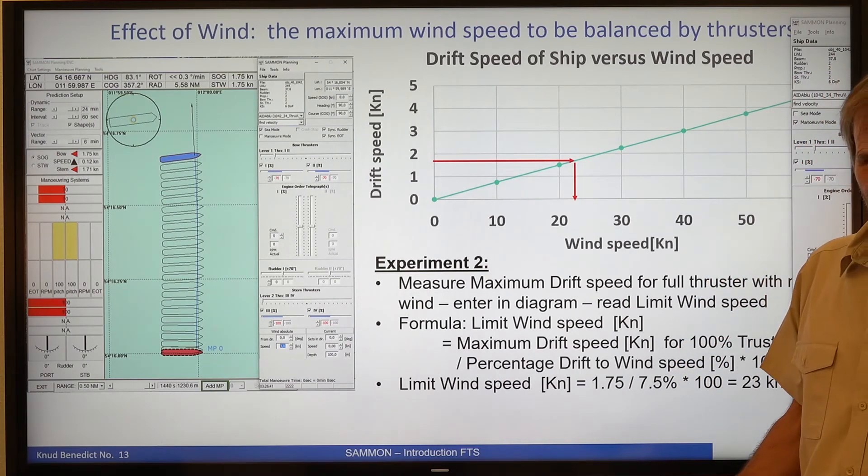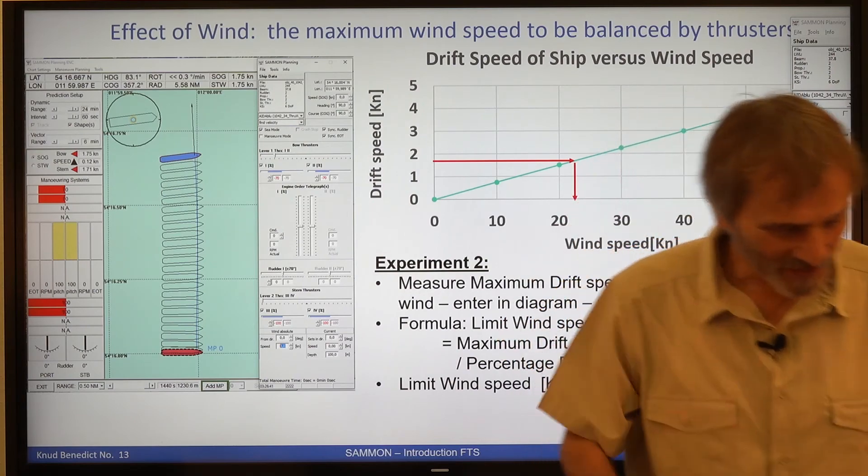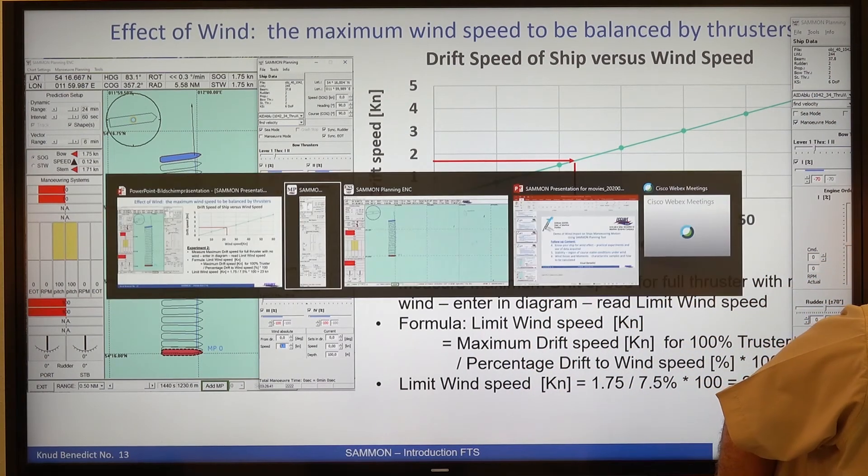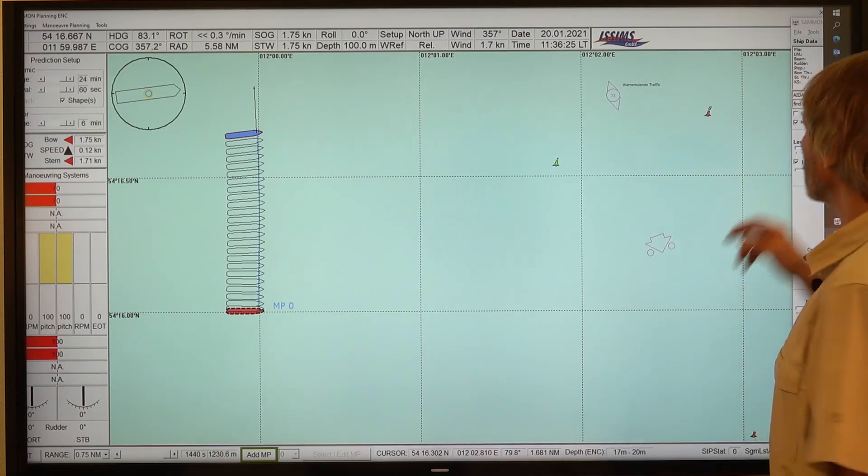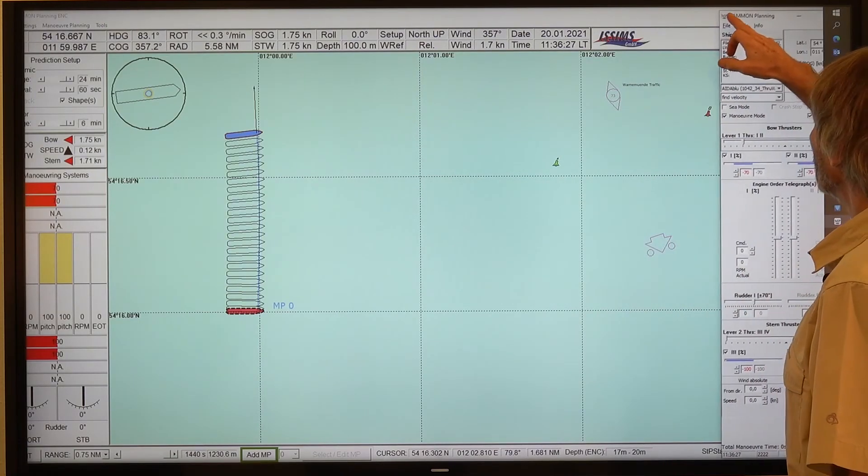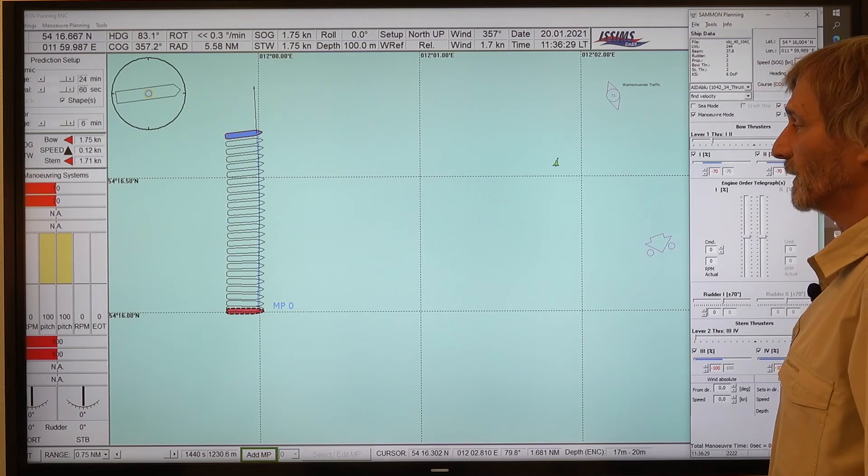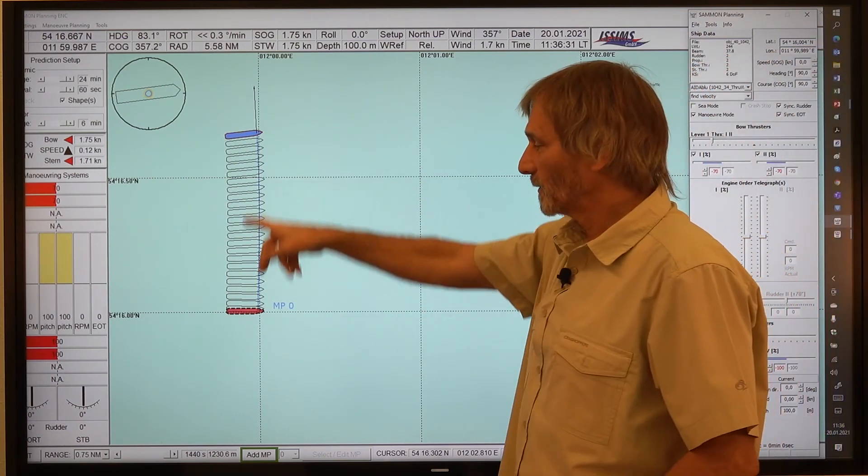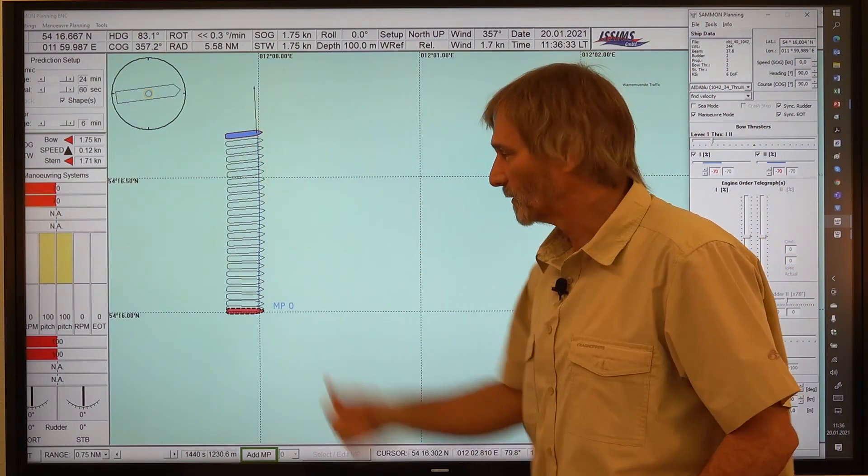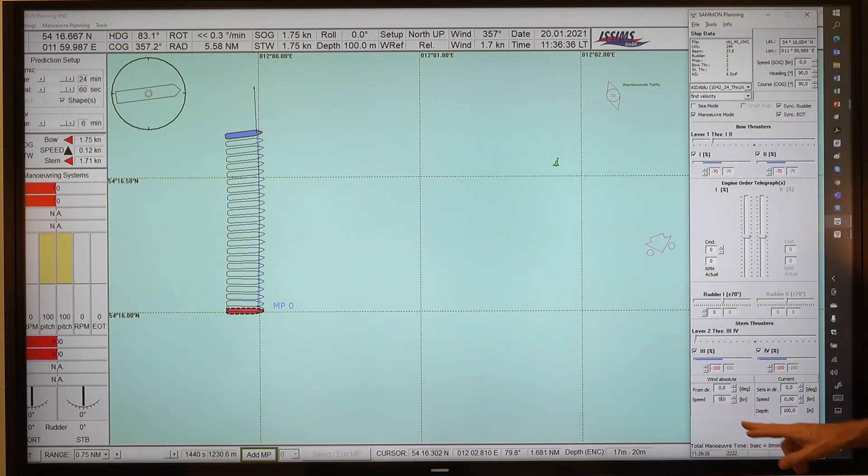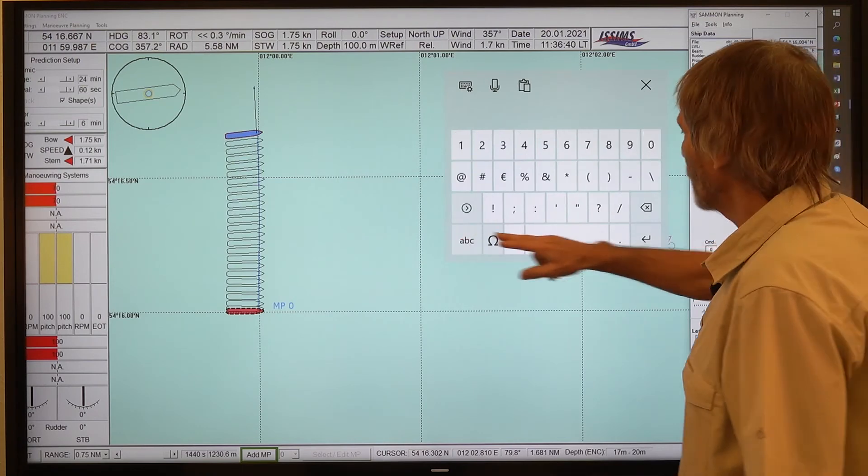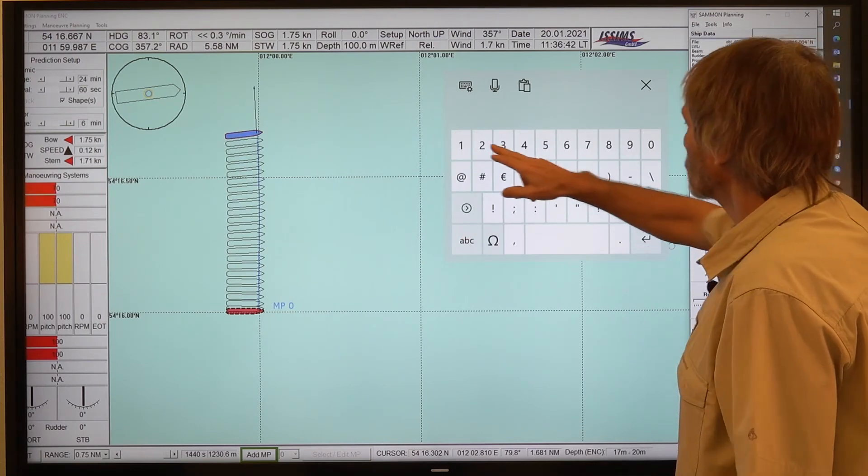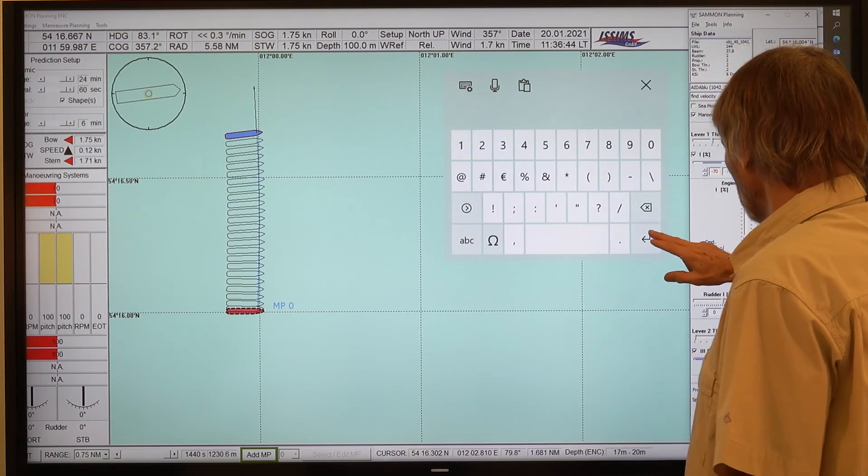Let's check it. So we go back in our experimental part. So we have it here. If we have the thruster working the ship to the north, then we go and set some wind against this. So it's 23 knots. This was the result.